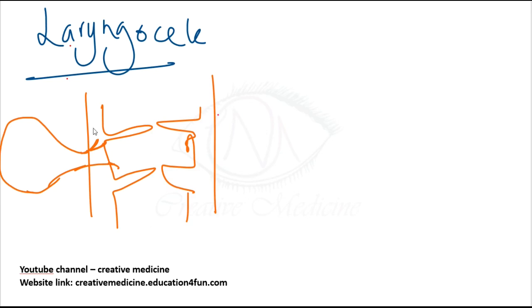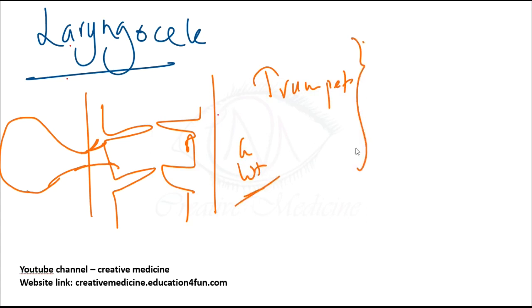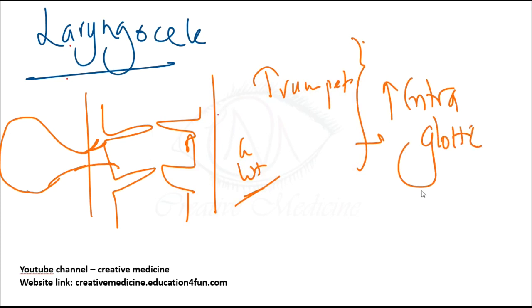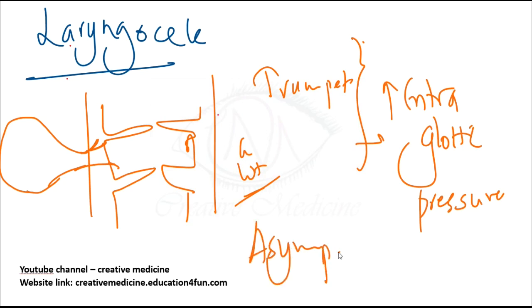The laryngocele extends upwards between the vestibular folds and the lamina of the thyroid cartilage. It mainly occurs in trumpet players, glass blowers, or weight lifters. In these people there is increased intraglottic pressure, and because of this increased intraglottic pressure, laryngocele will occur. It is mostly asymptomatic.